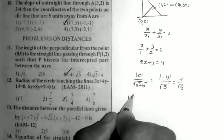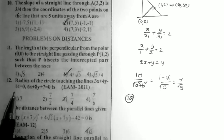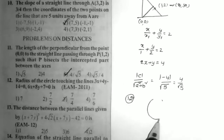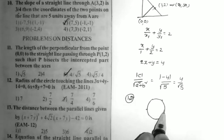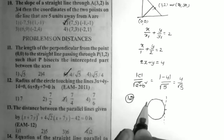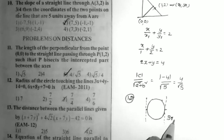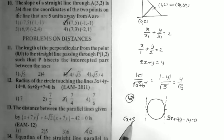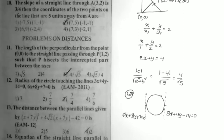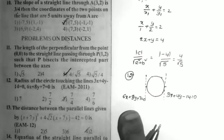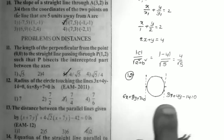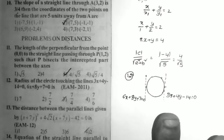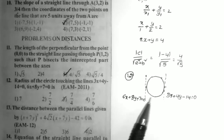Problem 12: Find the radius of the circle touching the lines 3x + 4y − 14 = 0 and 6x + 8y + 7 = 0. The circle touches these two lines. Observe that these two lines are parallel — the slope of both lines is −3/4, so the slopes are equal and the lines are parallel.